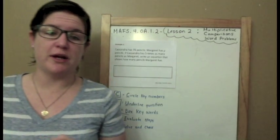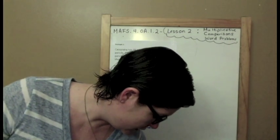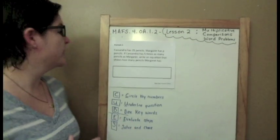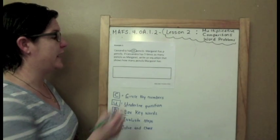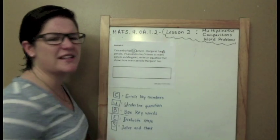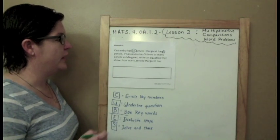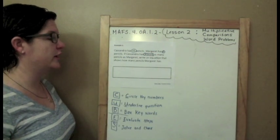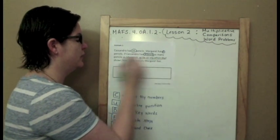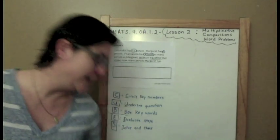Let me teach you. Let's start with Example 1. This is an equation editor response. Let's read it and use our CUBES method. Cassandra has 35 pencils. Margaret has P pencils, and I know that P is not a number but it's going to stand for a number, so I'm going to go ahead and circle my key numbers. If Cassandra has five times as many pencils as Margaret, write an equation that shows how many pencils Margaret has.